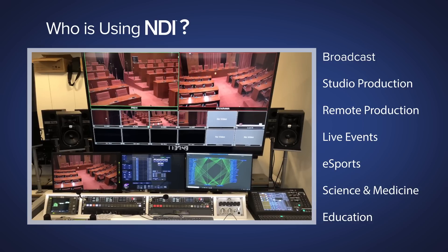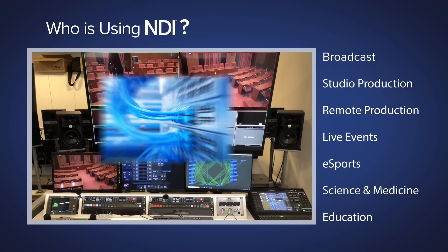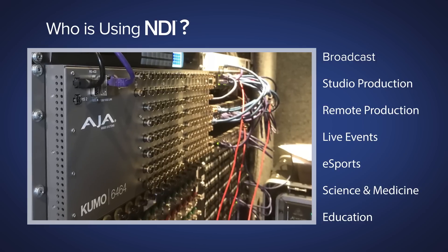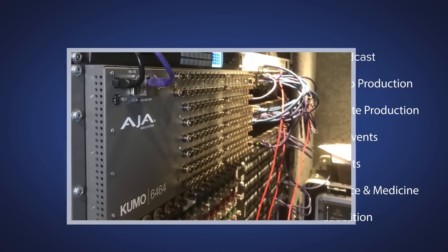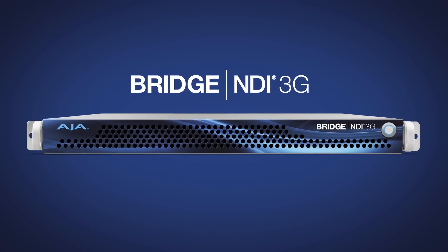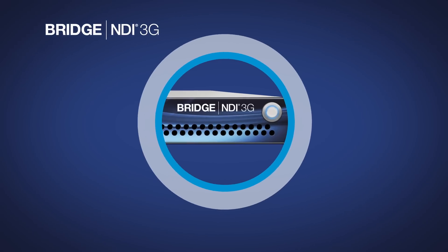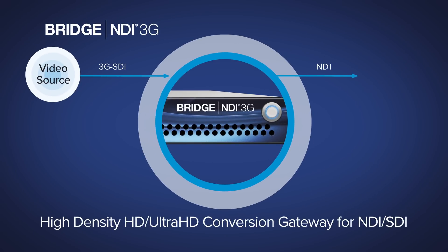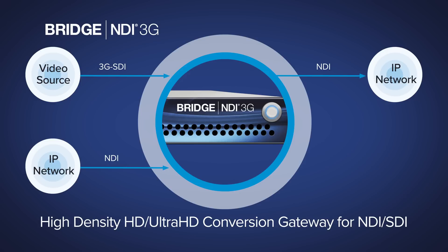As that demand increases, facilities and broadcasters need a way to easily integrate their existing infrastructure to a new NDI backbone. AJA is proud to announce Bridge NDI — a robust, high-density IP video gateway offering the ability to convert 3G SDI signals to and from NDI.